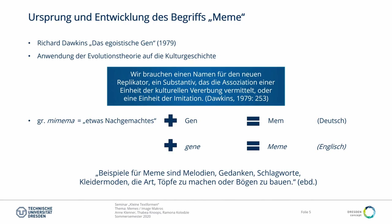Er schreibt in seinem Buch: Wir brauchen einen Namen für den neuen Replikator, ein Substantiv, das die Assoziation einer Einheit der kulturellen Vererbung oder einer Einheit der Imitation vermittelt. Daraus entwarf er ein Kunstwort, eine Zusammensetzung aus dem griechischen Wort Mimeme, was so viel heißt wie 'etwas Nachgemachtes' – wir kennen das auch im deutschen Wort 'mimen', also etwas nachmachen – plus dem Wort Gene. Im Englischen: Meme plus Gene macht zusammen Meme, um den Gegensatz zum Gen in der Evolutionsbiologie zu finden: das Meme in der Kulturgeschichte.